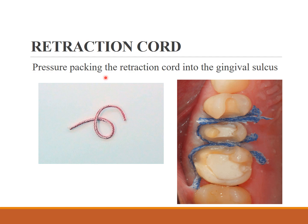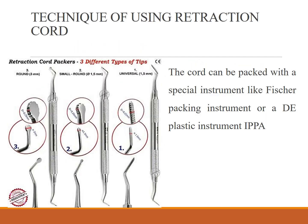Retraction cord is used with pressure packing into the gingival sulcus. The cord packer instrument comes in three types: universal, small round, and round — ranging from 1.0 to 1.5 mm up to 3 mm — and the cord is packed with this special instrument similar to a fissure-packing instrument.